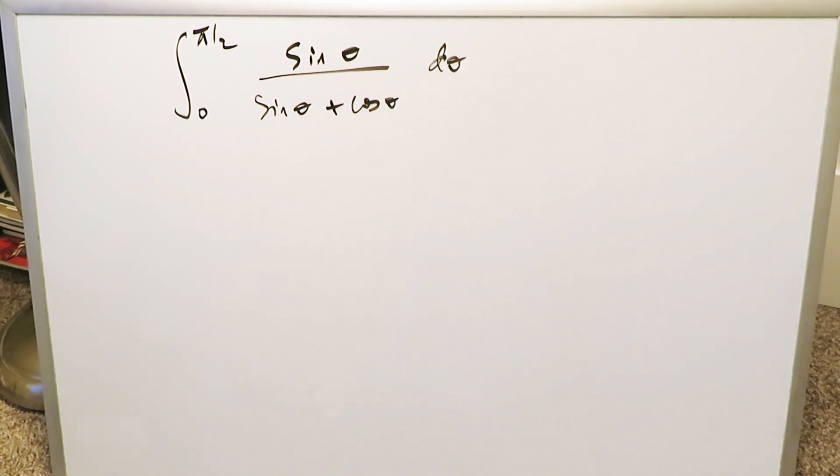Look at our integral: 0 to π/2, sine θ divided by sine θ plus cosine θ, dθ. Theta here is our independent variable. We have to integrate and solve this, and how would you do it?